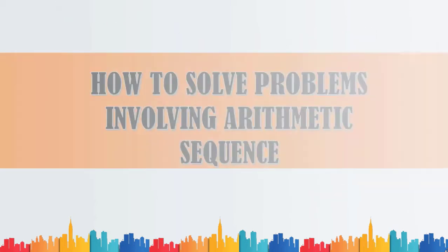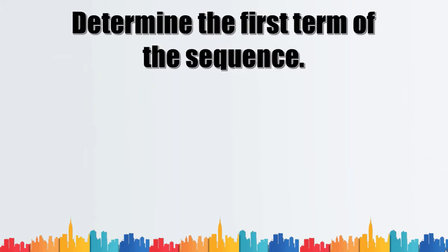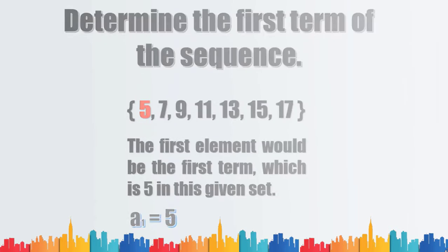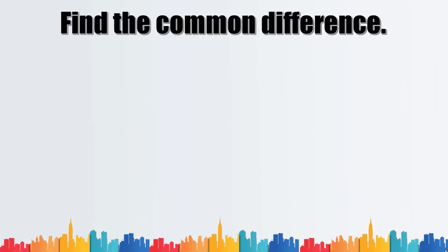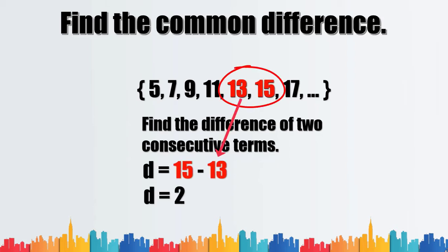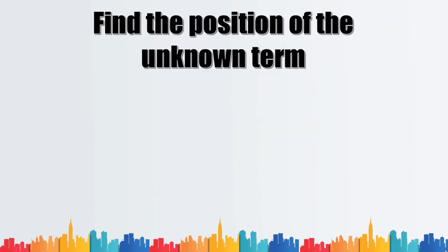How to solve problems involving arithmetic sequences. Number one: determine the first term of the sequence — the first element of the given set is the first term. Number two: find the common difference by finding the difference of two consecutive terms. Lastly, find the position of the unknown term, which is given in the question or can be found in the given set.